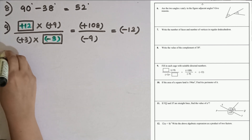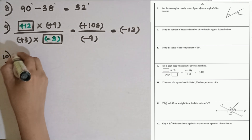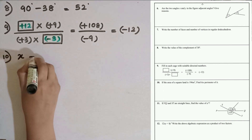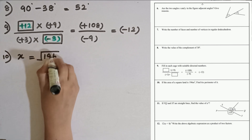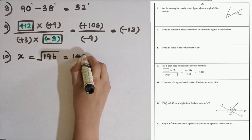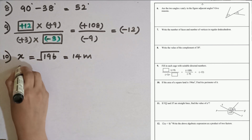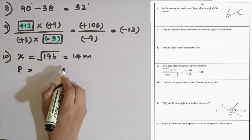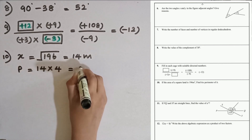Question number 10. If the area of the square land is 196 square meters, find the perimeter. First we find the side by taking the square root of 196, which is 14 meters. Now we can find the perimeter: 14 plus 14 plus 14 plus 14, or 14 multiplied by 4, equals 56 meters.